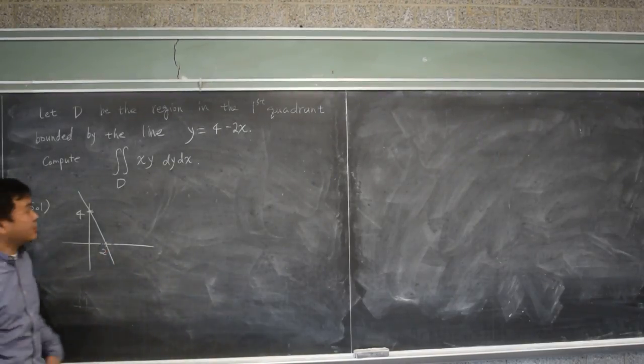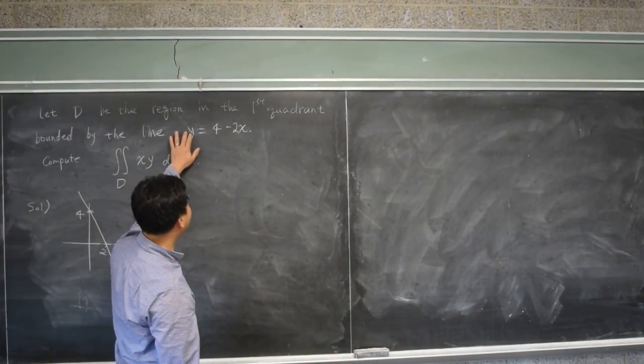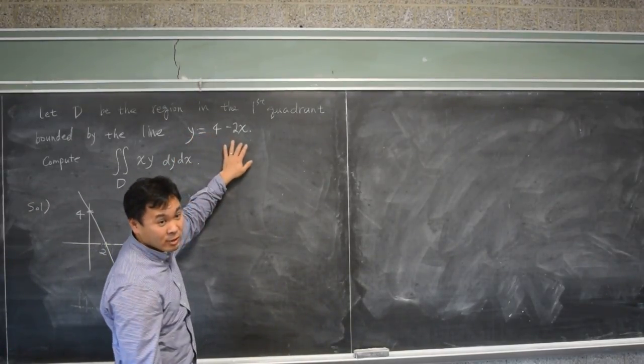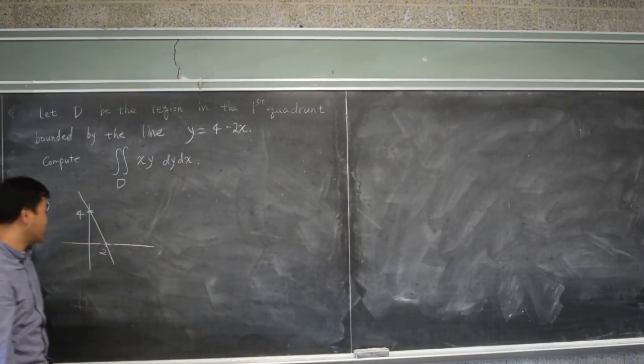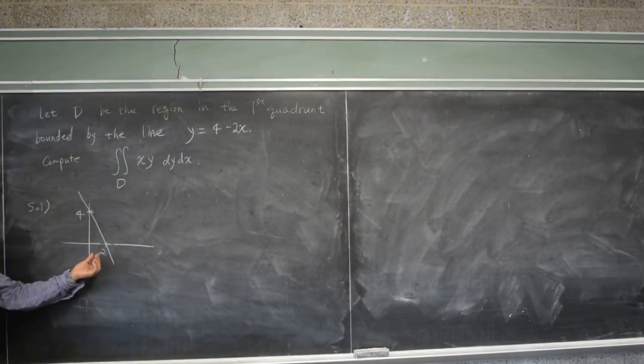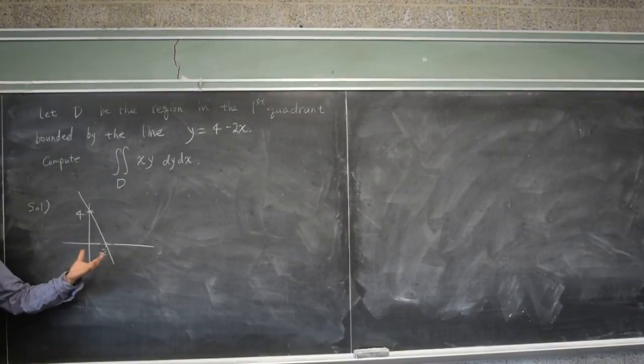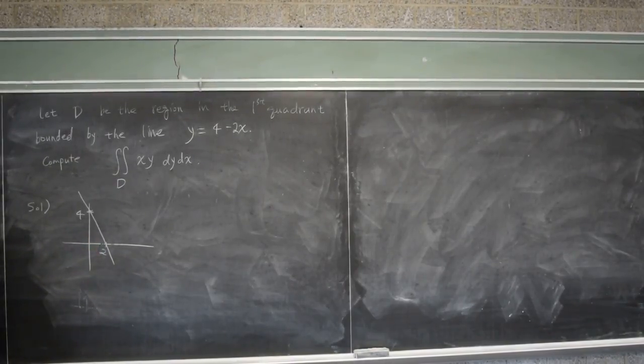And do you know what the x intercept is? You get that by setting y equal to 0. To get the x intercept, you set y equal to 0, 0 equals 4 minus 2x. If you solve that, you get x equals 2. Another way to see it is that if x is 2, you get y equal to 0. So it passes through the point 2, 0. So this is the domain D.